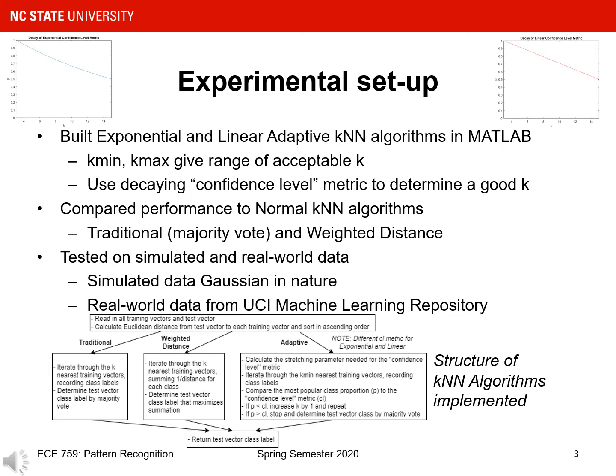I tested all the KNN algorithms that I implemented on simulated and real-world data. The simulated data was Gaussian in nature, with two classes consisting of multiple means, each whose data points varied from the mean by random Gaussian noise. The real-world data was obtained from the UCI machine learning repository. I used seven datasets, each with different properties, such as the number of classes, number of features, and number of observations present.